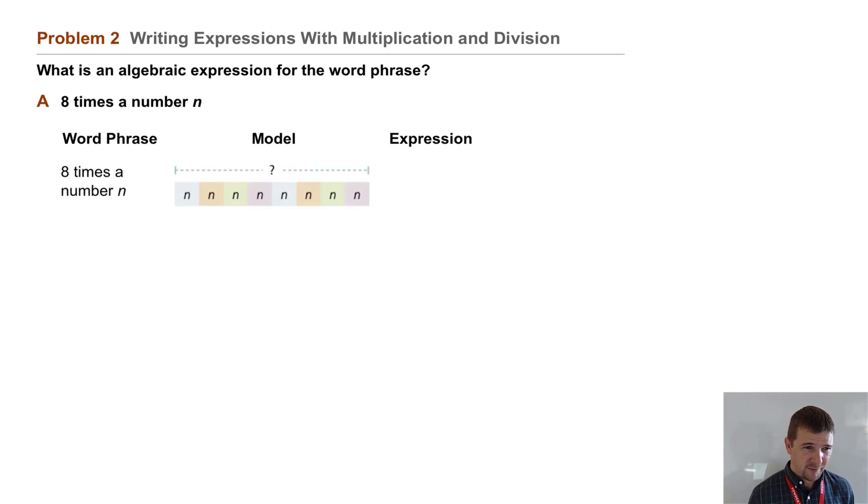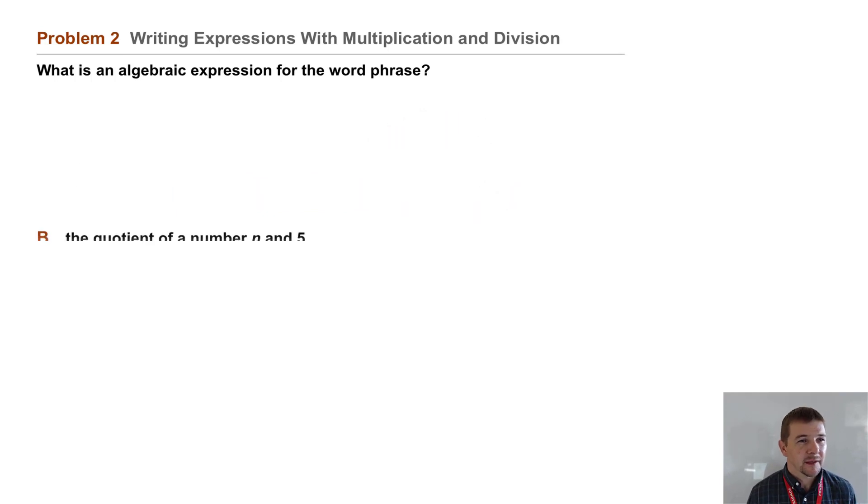A model: here we have eight different bars all with the width of n. And the expression would be 8 times n, or 8 times n using the dot to represent multiplication, or more simply 8n.